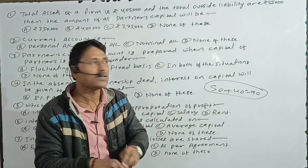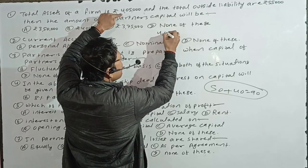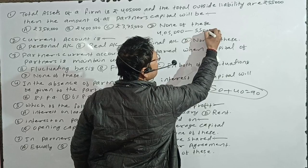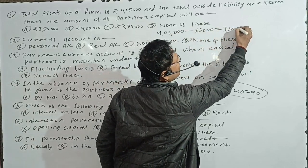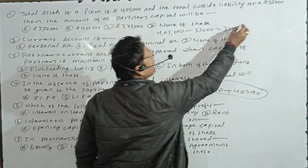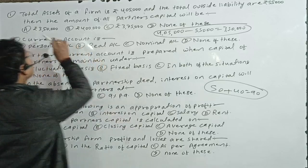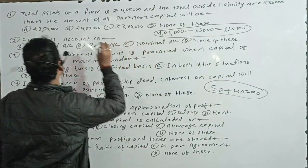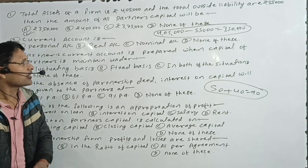The formula is: Capital = Asset minus Liability. Assets are 4,500,000 and the liability is 55,000. Your total capital is 3,500,000. The right answer is 3,500,000.